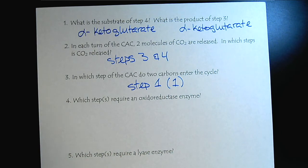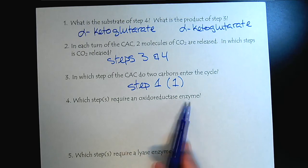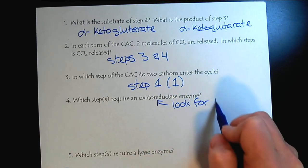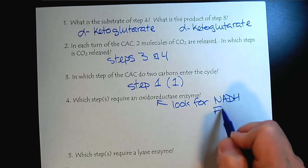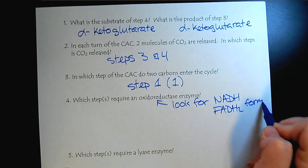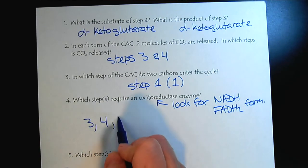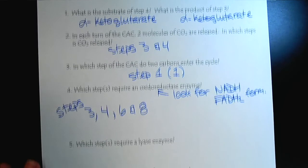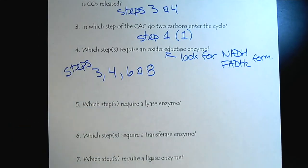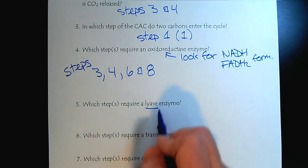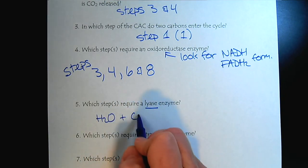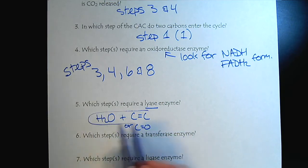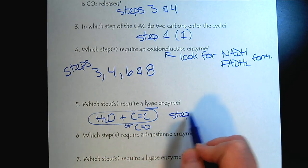Which steps require the oxidoreductase enzyme? Those are easy to spot. Look for the reduced coenzymes. Look for NADH and FADH2 formation. If we look back, we'll see steps three, four, six, and eight. Which of the steps require a lyase enzyme? Remember, lyase enzymes - it's water plus a carbon-carbon double bond or a carbon-oxygen double bond. For citric acid cycle, we're here. You'll notice that that is step seven. Which steps require a transferase enzyme? Notice that's step one. That's how the two carbons enter the citric acid cycle by the acyl group transfer.